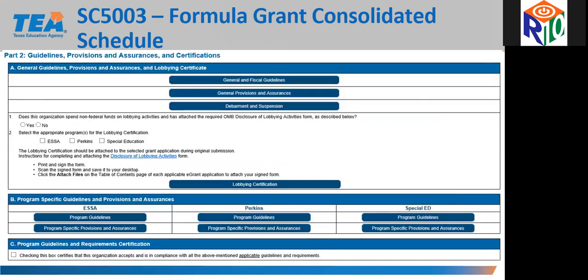For special education, part 2 of the SC 5003 replaces the CS 700 provisions, assurances, and certifications. Part 2A includes general guidelines, provisions, assurances, and the lobbying certificate for all programs. The applicant should read the linked information and answer the question regarding lobbying activities. If the answer to question 1 is yes, the LEA must indicate in question 2 which programs lobbying applies to, and complete, sign, and submit the Disclosure of Lobbying Activities form. Part 2B includes program-specific guidelines, provisions, and assurances. Once the LEA has read and can assure they are in compliance with parts 2A and 2B, they can check the box in part C.